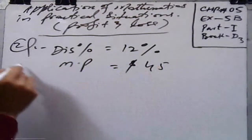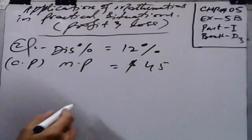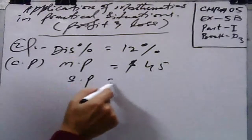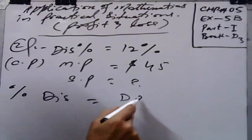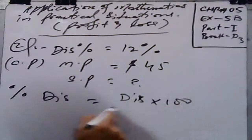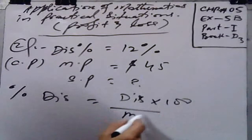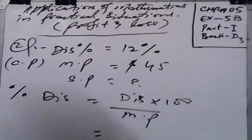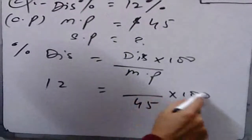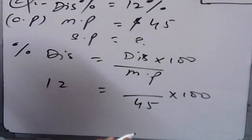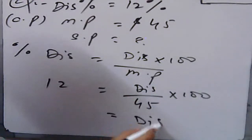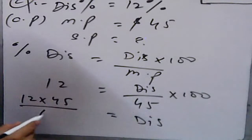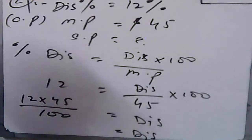The discount percentage is 12% and the market price is $45. Using the percentage discount formula — Percentage Discount = (Discount × 100) ÷ Market Price — and putting in the values: 12 = (Discount × 100) ÷ 45. By cross multiplication, Discount = (12 × 45) ÷ 100.